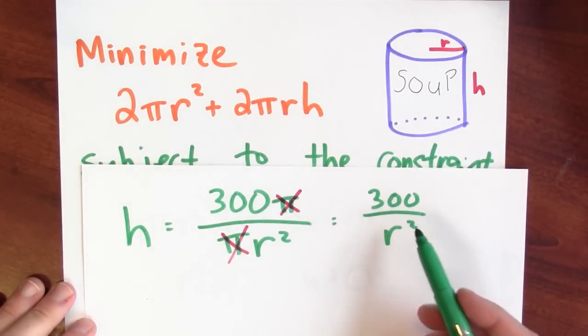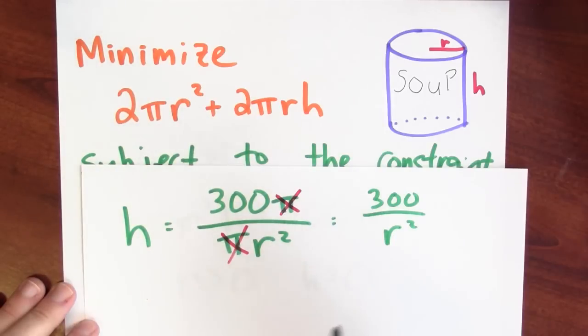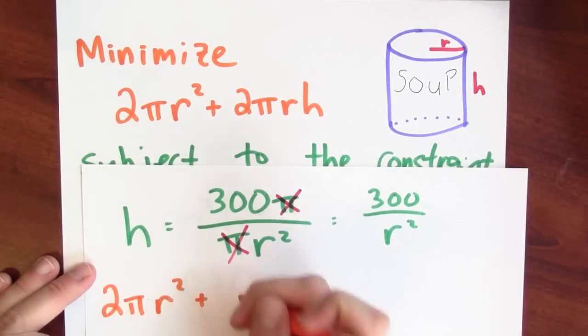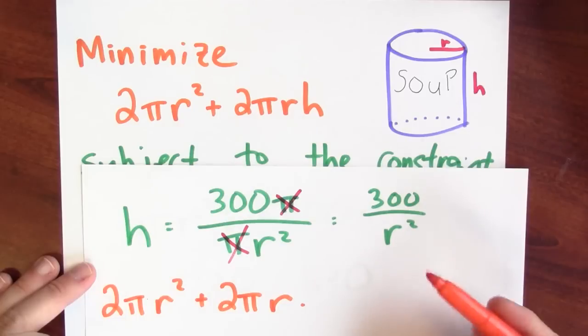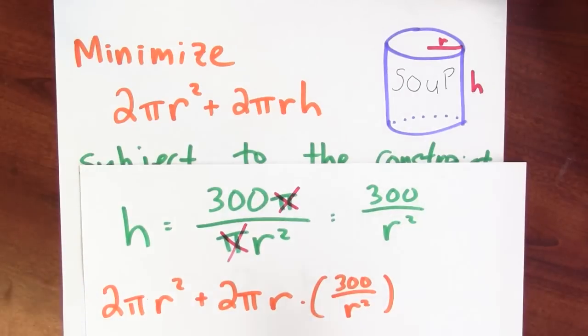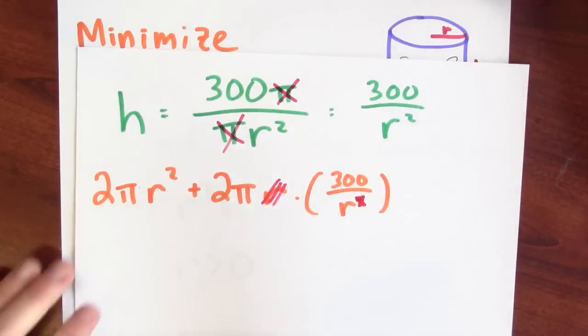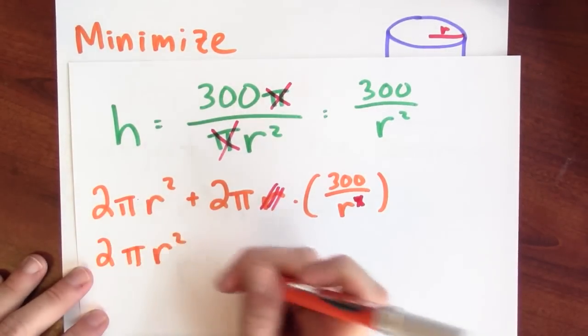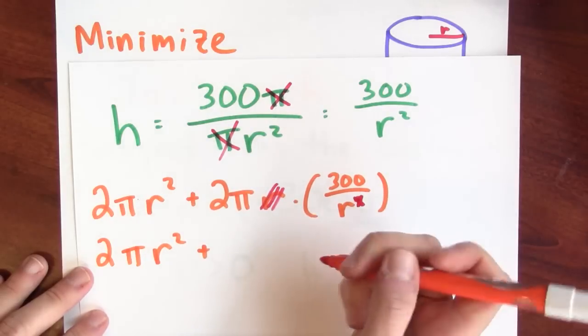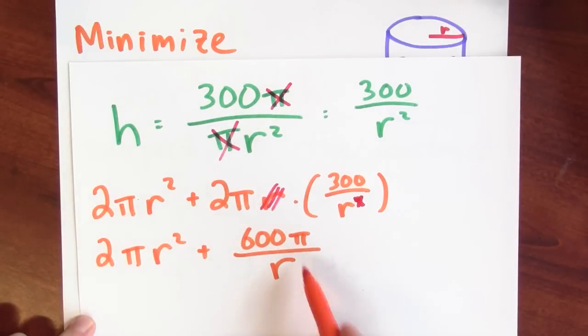Now once I've got an equation for h in terms of r, I can use this to rewrite the thing I'm trying to minimize just in terms of r. The thing I'm trying to minimize now is 2 pi r squared plus 2 pi r times h. But h, in order to satisfy the constraint, is 300 over r squared. And now I can simplify this a little bit further. I've got an r and an r squared here, so I can get rid of this square and get rid of this r. Then the thing I'm trying to minimize is 2 pi r squared plus 600 pi divided by r.